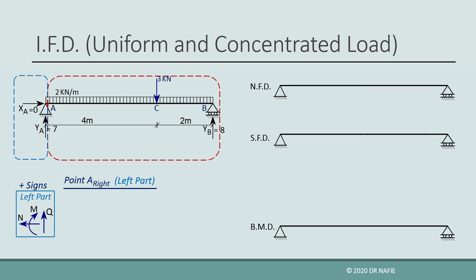Because the beam is not subjected to any horizontal force, the normal force will be zero for the whole beam. The shear force will be the sum of all the vertical forces in the left part. For this point, we only have one vertical force, yA, which is equal to 7 kilonewtons, so the shear force will be positive 7 kilonewtons. We draw this value to scale on the shear force diagram.